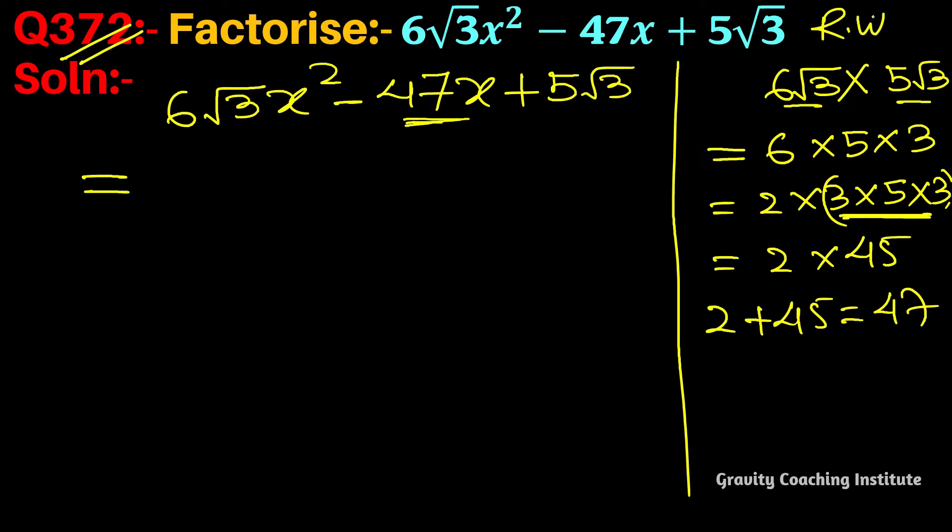So 6√3x² - 47x becomes 6√3x² - 2x - 45x + 5√3.